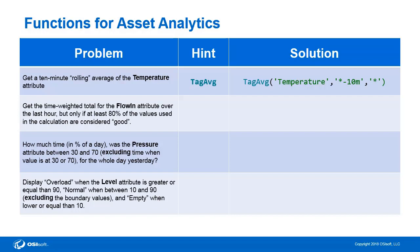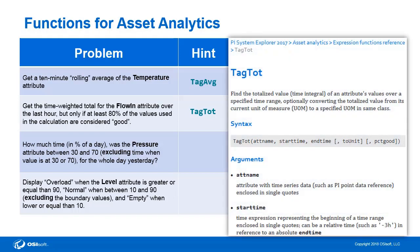Let's take a look at the next one: get the time-weighted total for the flow-in attribute over the last hour, but only if at least 80% of the values used in the calculation are considered good. In this case, the function that we'll want to use is the TagTot function. Looking up the syntax in the Help menu, we can see that we'll need an attribute name, and similar to the TagAvg function, a start time and end time. We can also specify a z-unit and a %good. In this case, we're going to use the %good and make sure that we set that at 80.